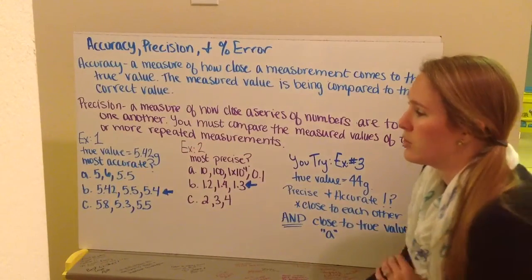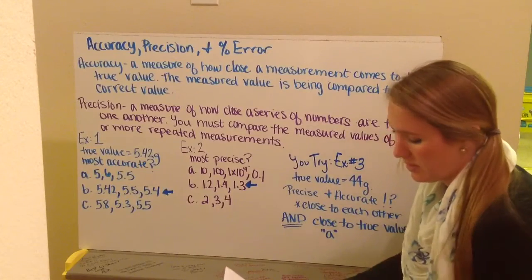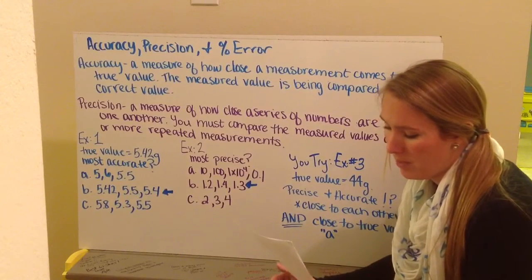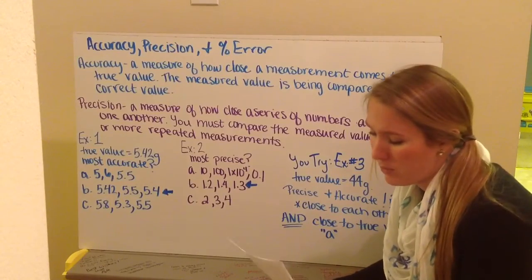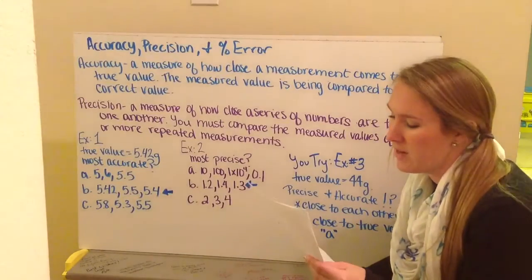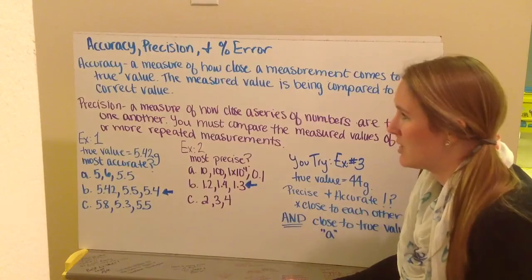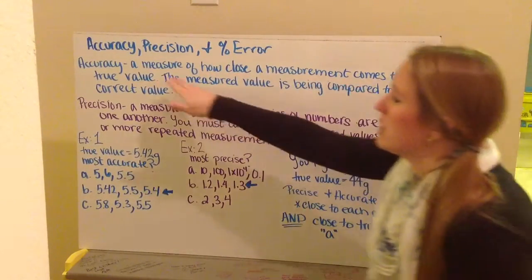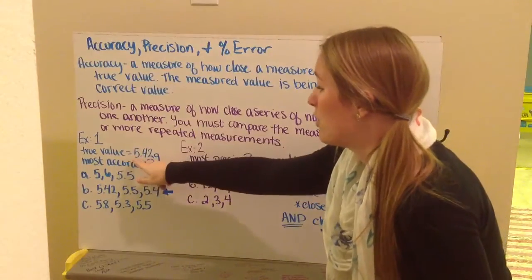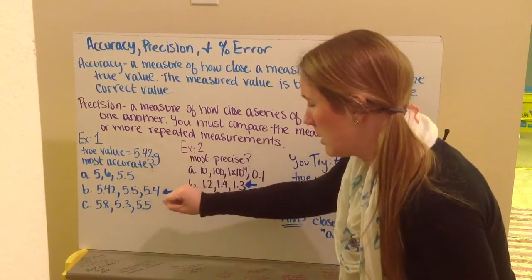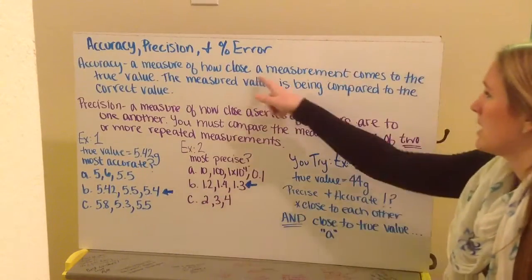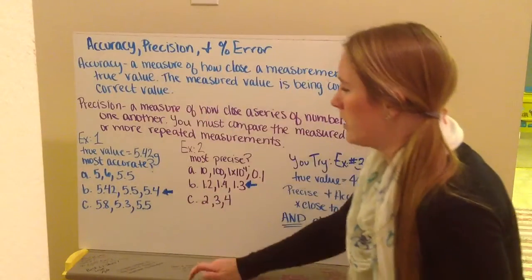Let's go through some example problems of this. We know that the true value of a sample of copper pieces is 5.42 grams. Which set of numbers is most accurate? Now accurate is how close the measurement comes to the true value. My true value is 5.42 grams. So I want to know which set of data comes closest to the true value.